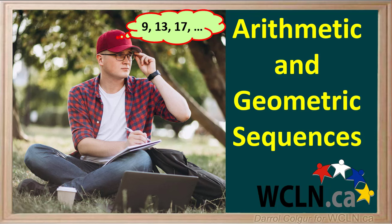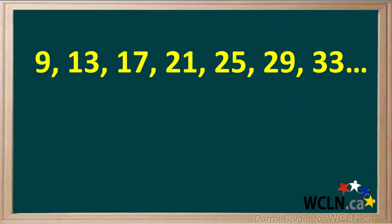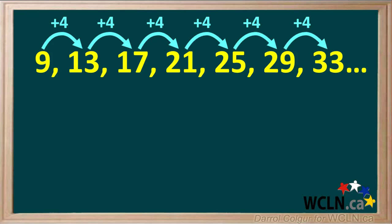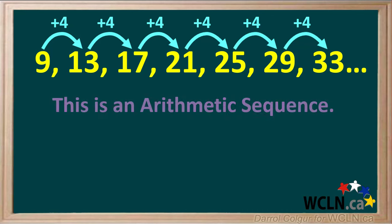Remember, a sequence is just a list of numbers. Let's have a look at this list of numbers. We can see that to go from one term to the next, we must add 4. Because we add the same number to each term to get the next term, this is called an arithmetic sequence.